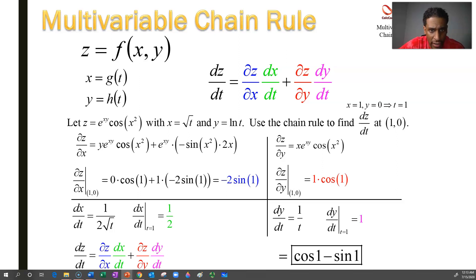And we plug these guys in. They're color-coded from where they need to go. Negative 2 sine 1 is multiplied by a half and cosine 1 is multiplied by 1. And we end up with cosine 1 minus sine 1. That's like 1 radian, like 57 degrees. It's just an expression cosine of 1 minus the sine of 1. You just executed the multivariable chain rule.